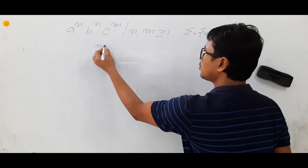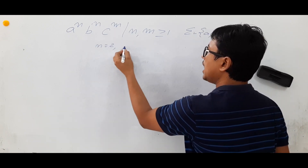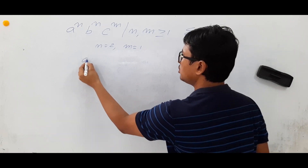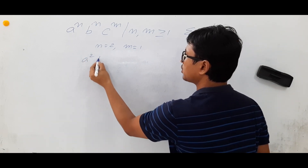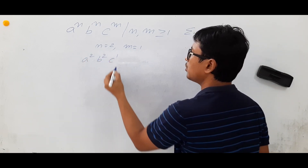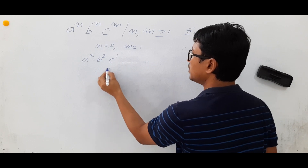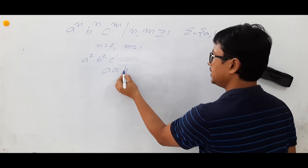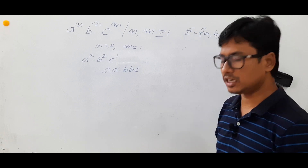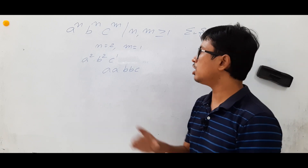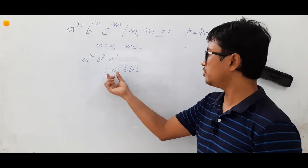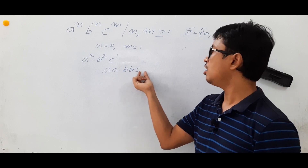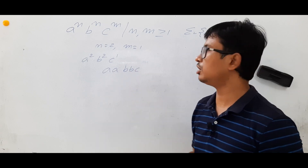Let me take n equal to 2 and m equal to 1. Then it looks like a^2 b^2 c^1, giving the string 'a a b b c'. This string belongs to the given language. Notice that the number of a's equals the number of b's, and we don't care how many c's appear.